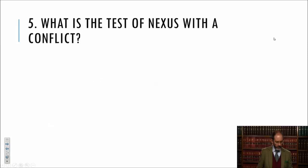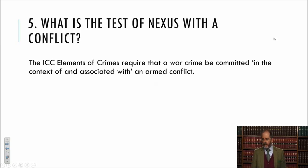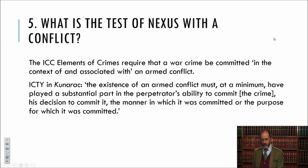Summing up: a war crime requires prohibited conduct occurring in an armed conflict — be it international or non-international — committed against a protected person. The conduct also has to be sufficiently connected with the armed conflict. The ICC elements of crime speak of a war crime being committed in the context of and associated with an armed conflict. The ICTY said in the Kunarac case that the existence of an armed conflict must, at a minimum, have played a substantial part in the perpetrator's ability to commit the crime, his decision to commit it, the manner in which it was committed, or the purpose for which it was committed.